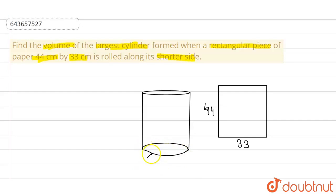So this circumference of the base will be equal to the length or the breadth of the rectangle. Since it is rolled along the shorter side, the circumference should be equal to 2πr.